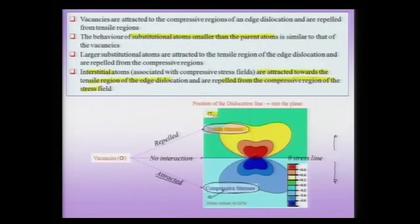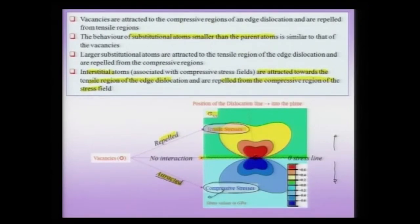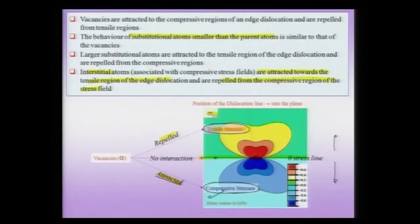To summarize: vacancies are attracted towards the compressive regions and repelled from the tensile regions. There is a zero-stress line right at the middle of an edge dislocation in an infinite medium — a vacancy sitting exactly on this line will not interact with the dislocation stress field and will remain unaltered. In general, the elastic interaction between a point defect and a dislocation stress field can lead to attraction, repulsion, or in special cases no interaction at all. This can lead to assisted diffusion of these point defects towards or away from the dislocation.